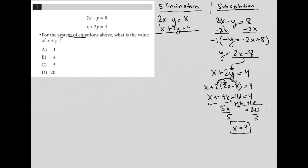So to do that, I'm going to multiply the bottom equation by negative 2. Why negative 2? Well, because if my top equation is still 2x minus y equals 8, and now when I multiply the second equation by negative 2, I get negative 2x minus 4y equals negative 8. This allows me to eliminate the x value.